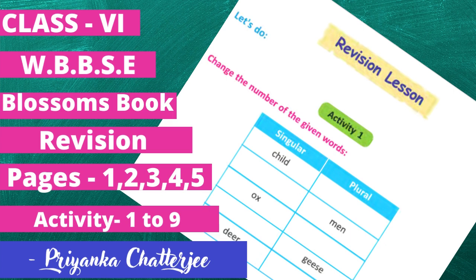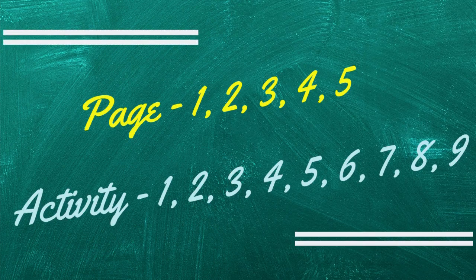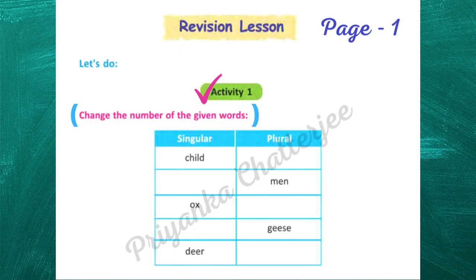In the revision lesson, page numbers 1, 2, 3, 4, 5, we will discuss the activities we have. So let's start with activity 1: change the number of the given words. This is very simple.